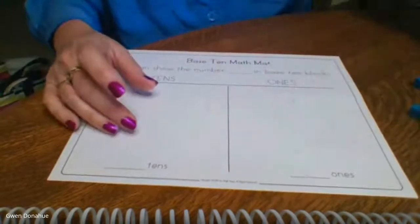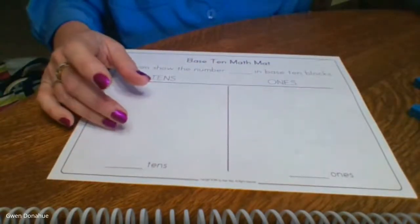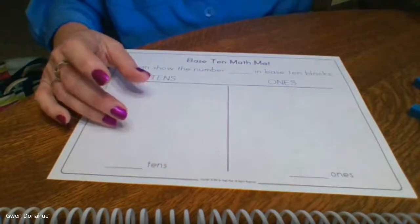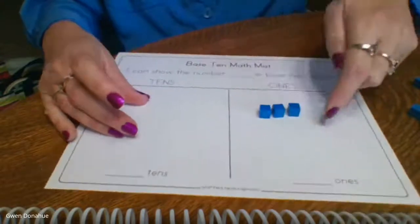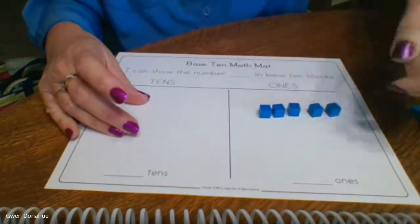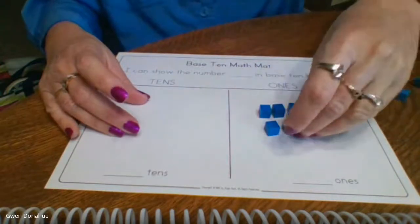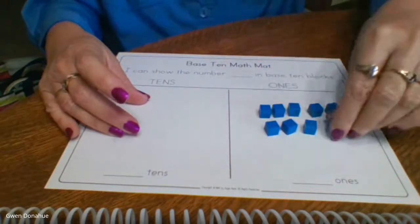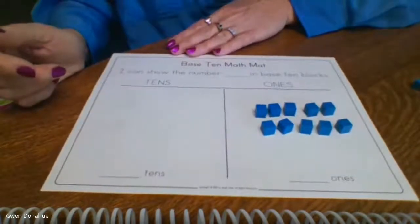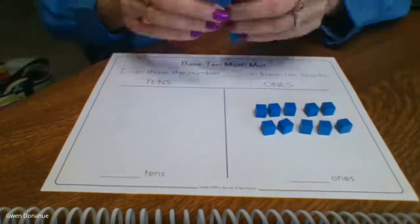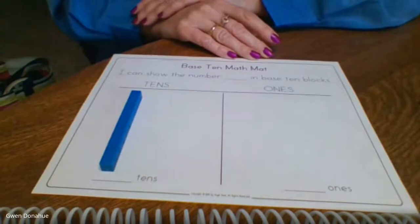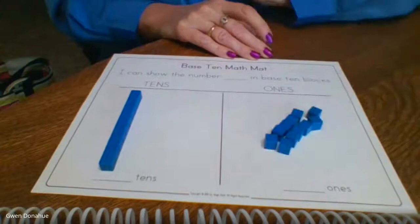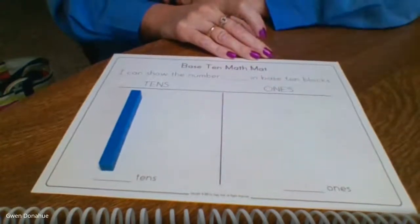Now if I wanted to show you 10, I could put 10 ones: 1, 2, 3, 4, 5, 6, 7, 8, 9, 10. There are 10 ones all by themselves, but you know it would have been a lot faster. That is 10. That's one group of 10. So right there was 10. This is 10 ones, but it's a lot easier to do it that way, isn't it?